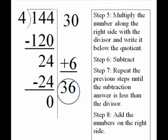Step 8, add the numbers on the right side. In this case, because we didn't miss any, we can just say the numbers out loud. 30, 6. That's our answer.